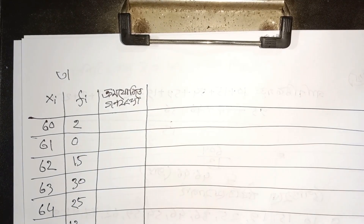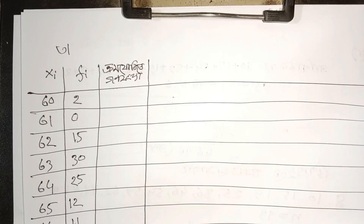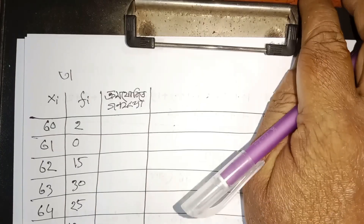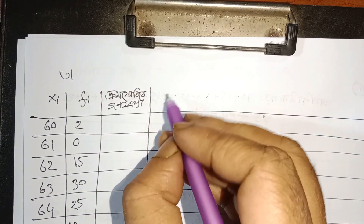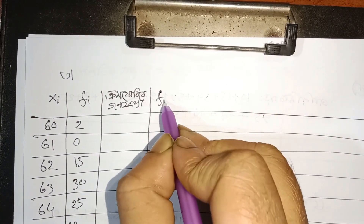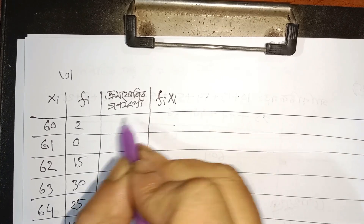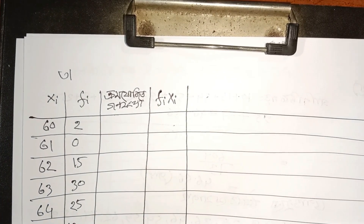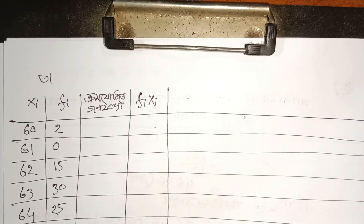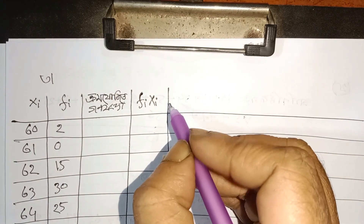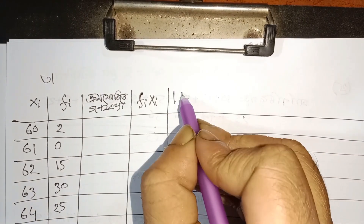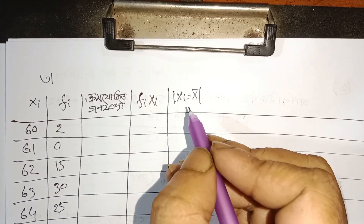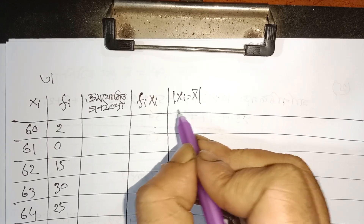If we look at the same thing, we will see the same thing. This is chromo-jojito-gono-sangkhah. And the first thing we will do is fi-xi. If I and x-i, we will try to make this column. We will try to make the same thing.